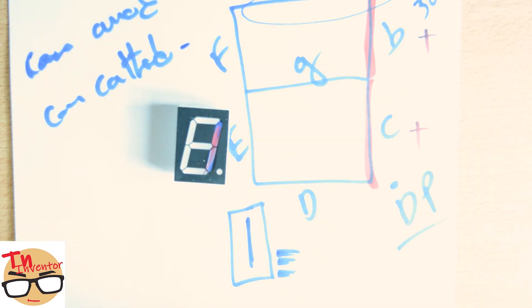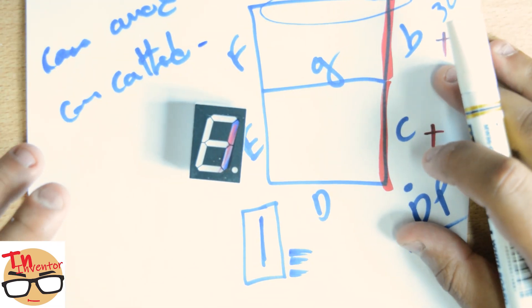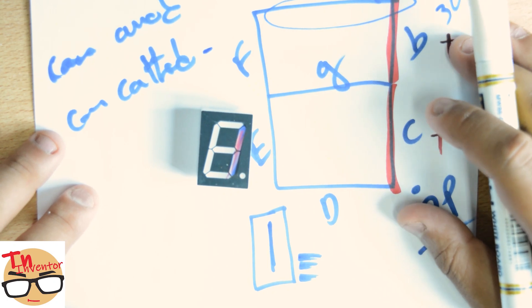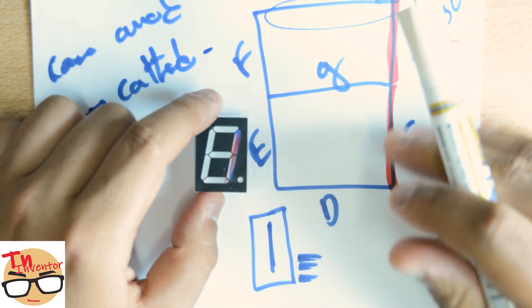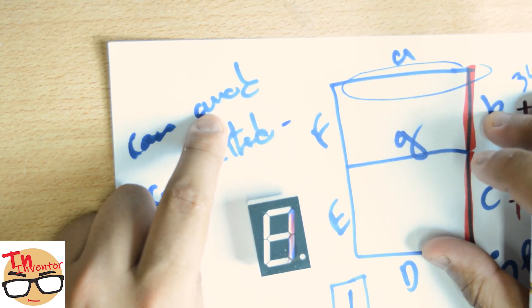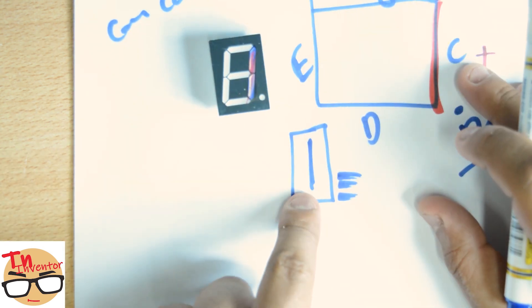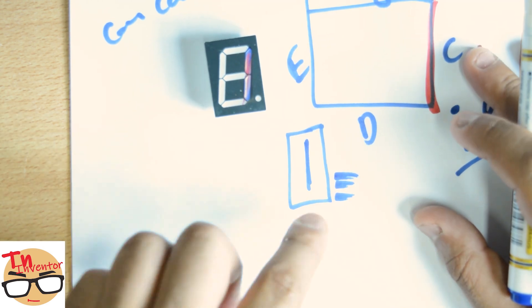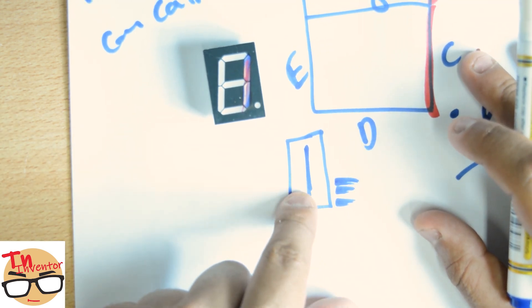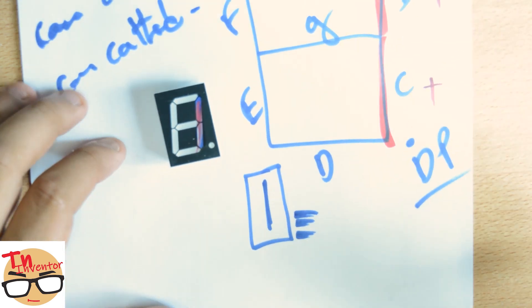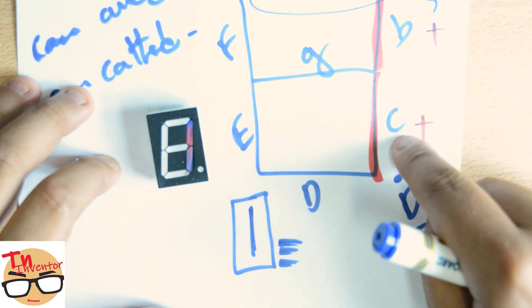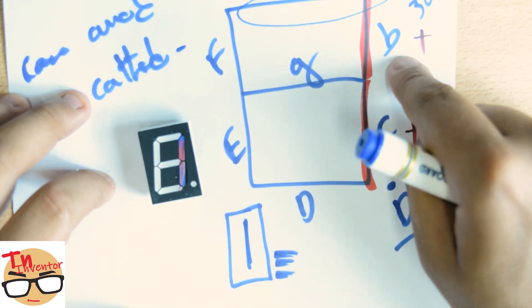With common anode, it's in reverse. To light this one, since all anodes are connected together, I need to apply 3 volts on the common anode. To light C and B, I need to connect each one to ground.